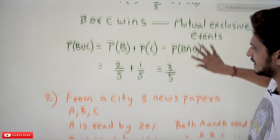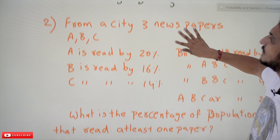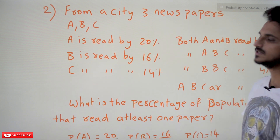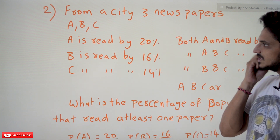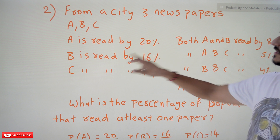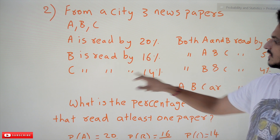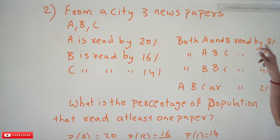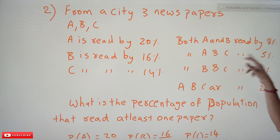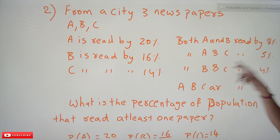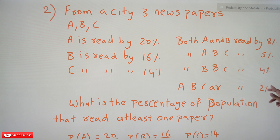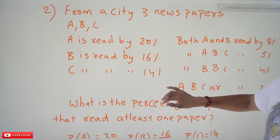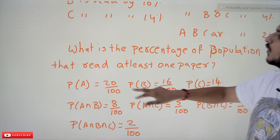Coming to the next question: from a city, three newspapers A, B, C are published. A is read by 20%, B by 16%, C by 14%. Both A and B are read by 8%, both A and C by 5%, both B and C by 4%, and all three A, B, and C are read by 2%. This is the data given in the question.